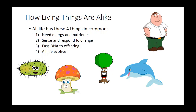Everything that's alive can sense and respond to change. Everything that's alive uses DNA, and they pass that DNA to their offspring. And all living things evolve. Because when DNA is passed from you to your offspring, it's not a perfect copy — that's why you don't look exactly like your parents or your siblings. A change in genetics between generations is the definition of evolution.